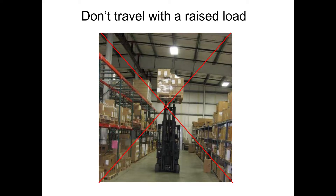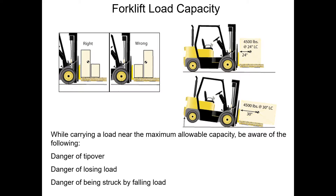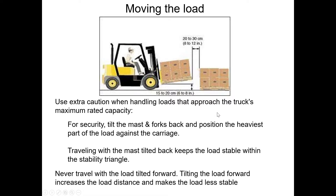When carrying a load near maximum allowable capacity, there's an increased danger of tip-over, losing the load, and a pedestrian being struck by falling material. For security, tilt the forks back and position the heaviest part of the load against the carriage — this is how you cradle a load safely. Traveling with the load tilted back keeps it stable and within the stability triangle. Never travel with the load tilted forward — if you stop suddenly, you'll lose that load.